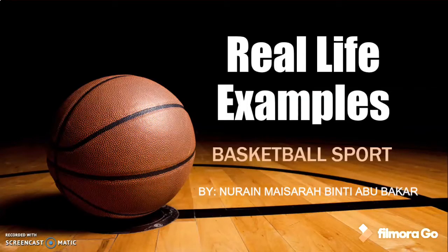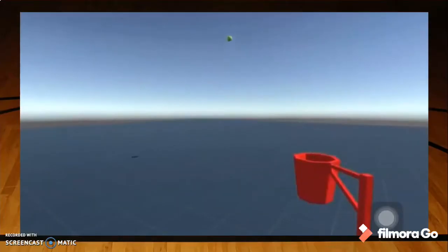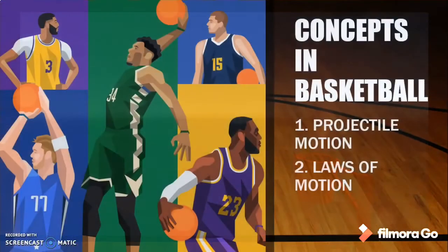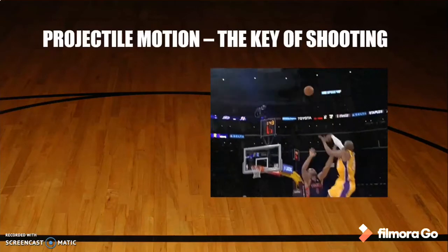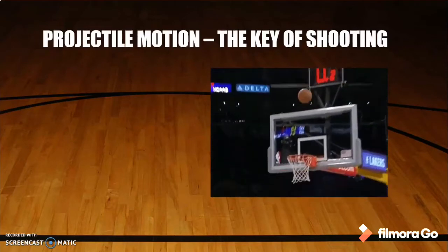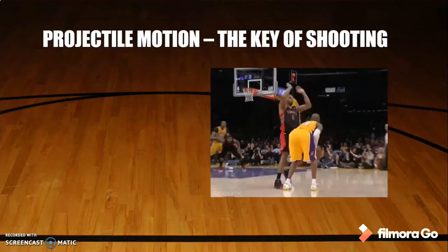The real example we chose is a basketball sport. Let's see the demonstration. There are two main concepts in basketball which are projectile motion and law of motion. Projectile motion is the key of shooting in basketball.